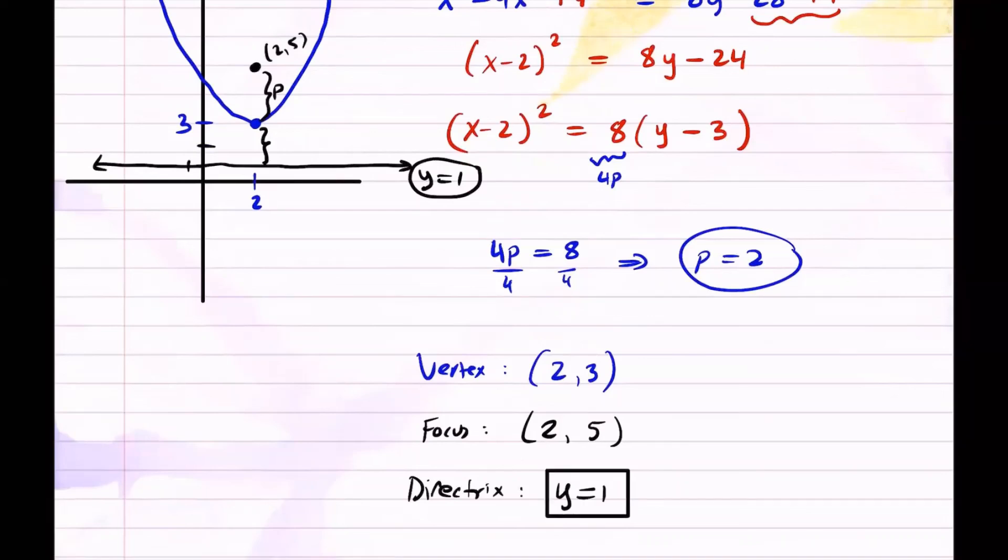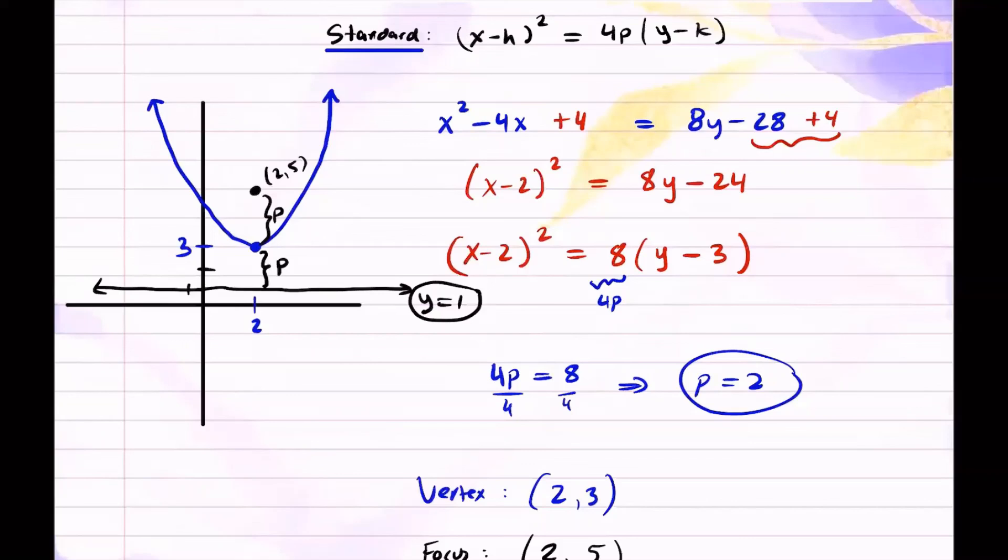So since the vertex was at 2 comma 3, in the y coordinates, we just subtract 2 because p is 2. So this will give us the directrix. And that completes our picture.